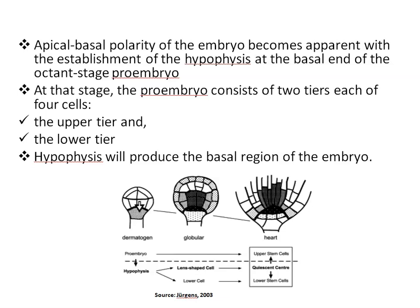The hypophysis adopts its embryonic fate secondarily. At this stage, the pro-embryo consists of two tiers, each of four cells. The upper tier will give rise to the apical region from which the shoot meristem and most of the cotyledons derive, whereas the lower tier will give rise to the central region generating the remainder of the cotyledons, the hypocotyl, the embryonic root, and the upper tier of the root meristem cells.